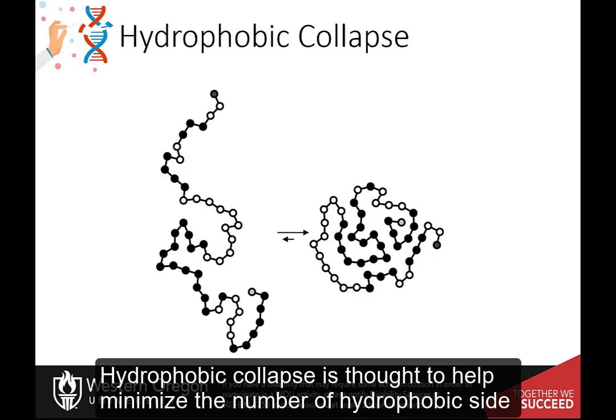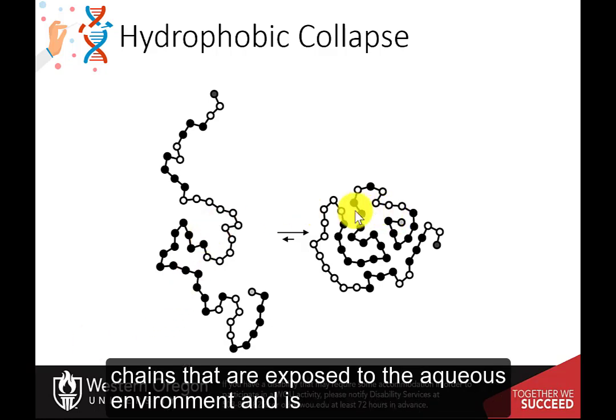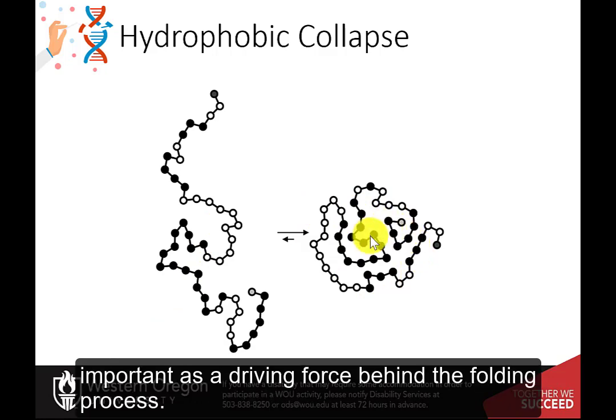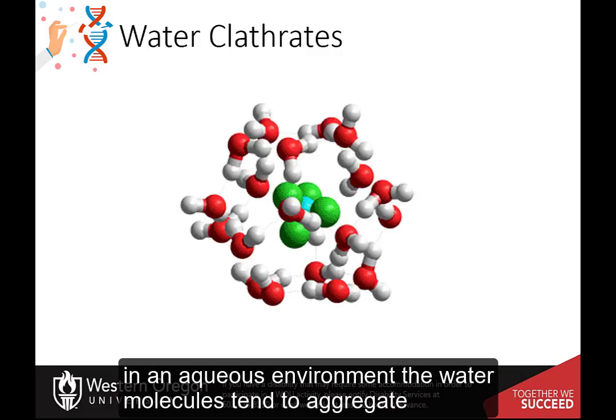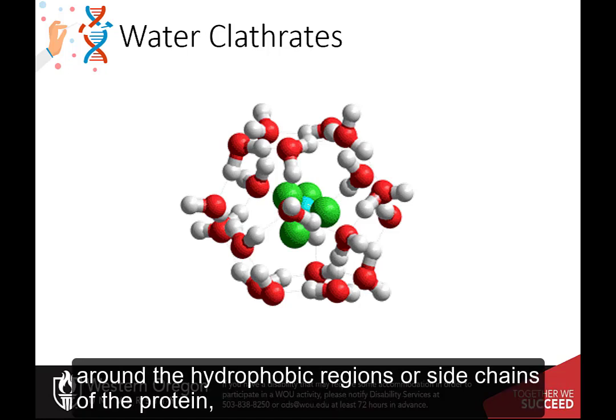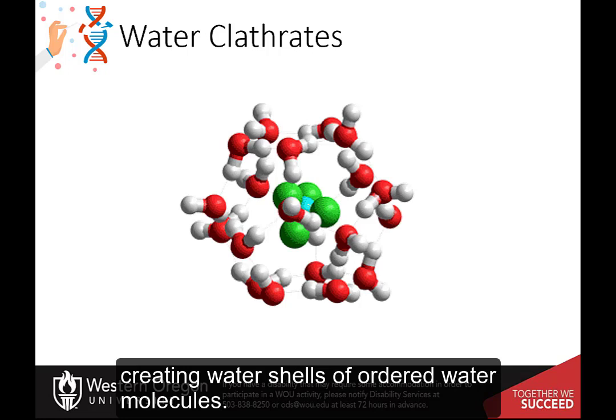Hydrophobic collapse is thought to help minimize the number of hydrophobic side chains that are exposed to the aqueous environment and is important as a driving force behind the folding process. In an aqueous environment, the water molecules tend to aggregate around the hydrophobic regions or side chains of the protein, creating water shells of ordered water molecules.